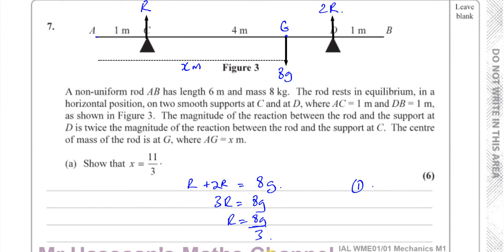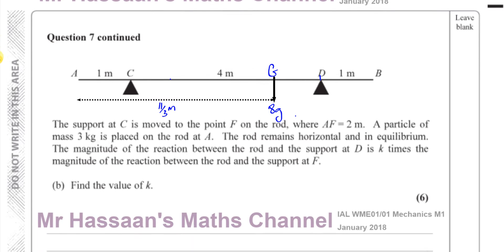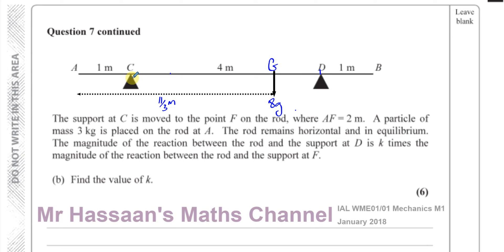For part b, we're told that the support at C is moved to point F where AF equals 2 meters. A particle of mass 3 kilograms is placed on the rod at A. The rod remains horizontal and in equilibrium. The magnitude of the reaction at D is k times the magnitude of the reaction at F. The center of mass is still 11 over 3 meters from A, and the weight of the rod is still 8g newtons.